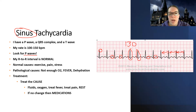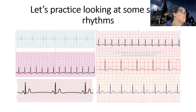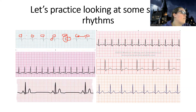Now let's look at some sinus rhythm strips and break them down before moving to a case study. Looking at this first strip: I want to see P waves, QRS complexes, and T waves all the way through — and yes, it has all those parts. Since these are all sinus rhythms, what I need to do is just count the rate. Counting the pointy peaks: one, two, three, four, five, six, seven — I have a heart rate of 70. Everything's normal, so this is normal sinus rhythm.